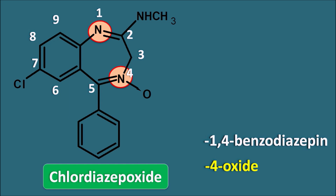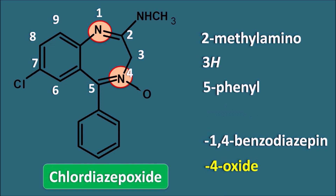Looking at the groups attached at various positions: at the second position there is a methylamino group, written as 2-methylamino. The third position is saturated, so 3H. The fifth position has a phenyl ring, so 5-phenyl. The seventh position has chloro, so 7-chloro.